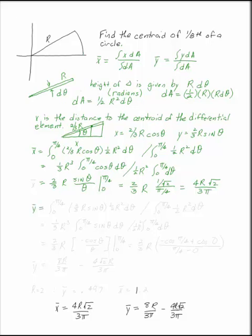We can do the same thing for our y bar. Y bar is going to be the integral from 0 to pi over 4. We're still doing d theta. But now we're going to use the y value. So I'm going to have two-thirds r sine theta times one-half r squared d theta divided by the same area.